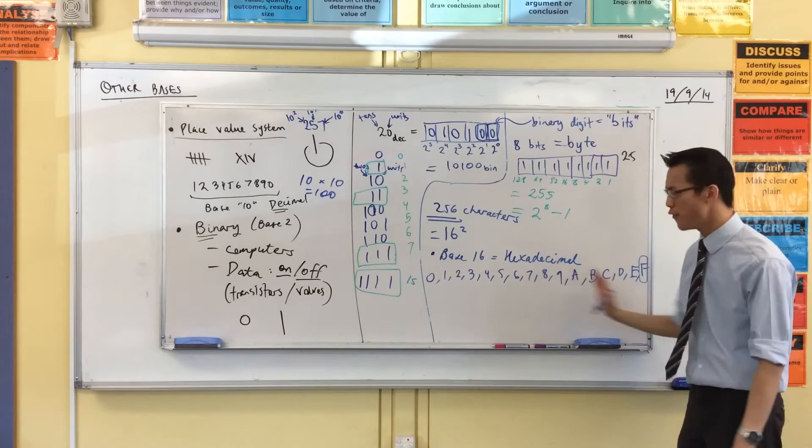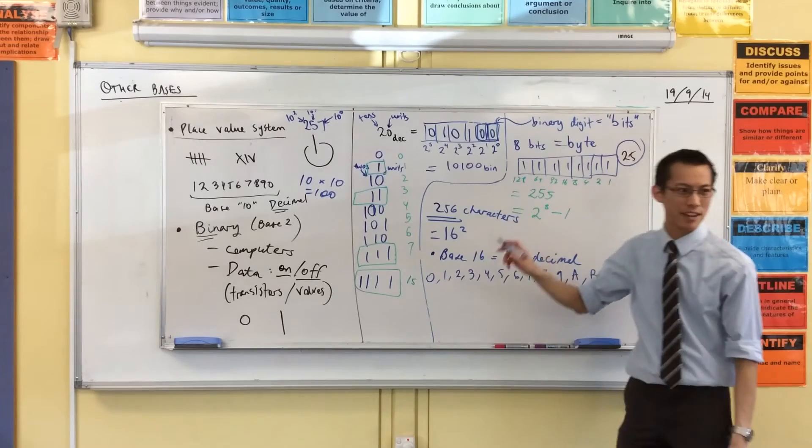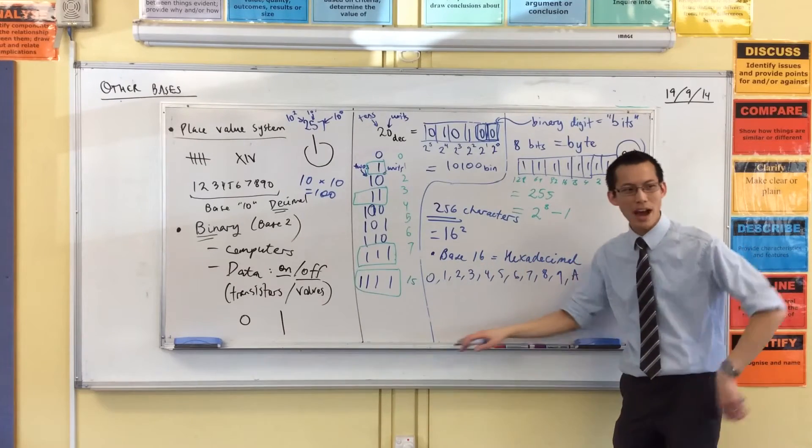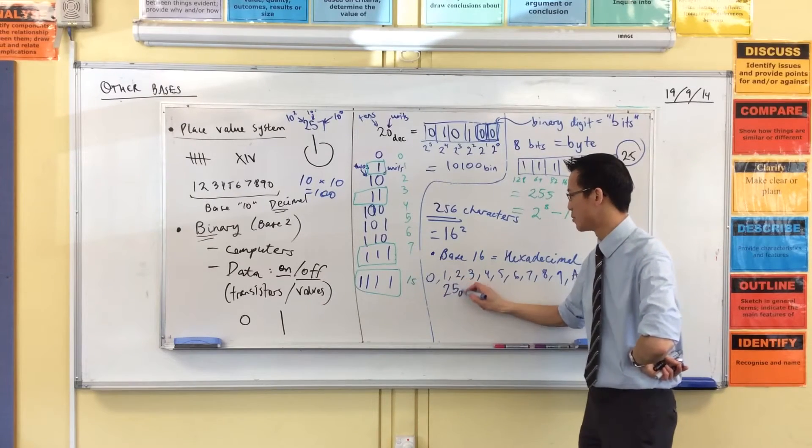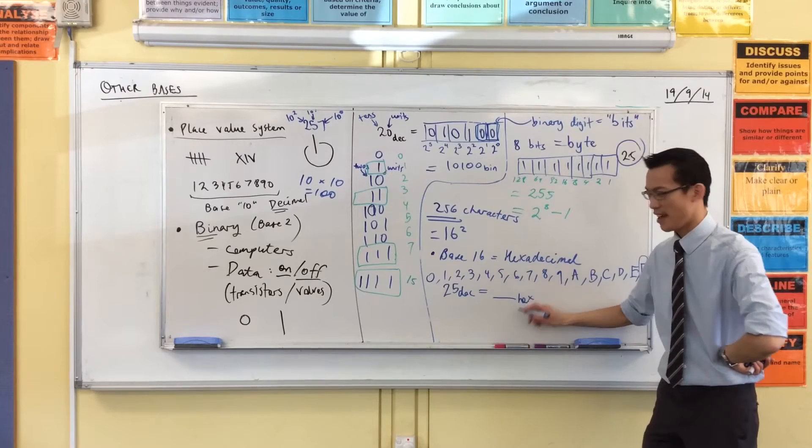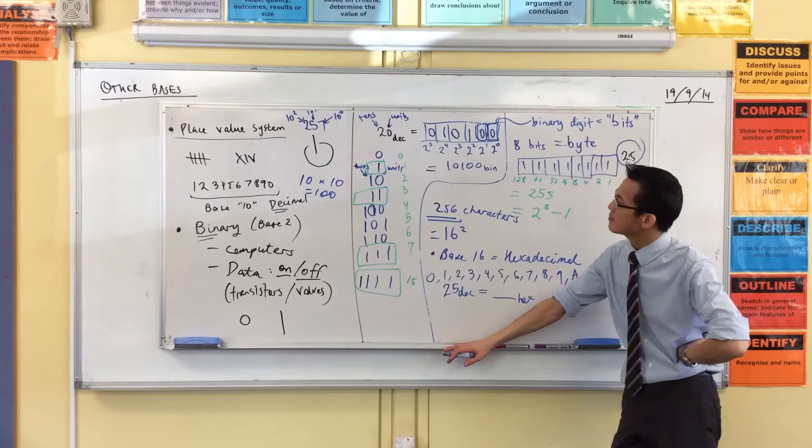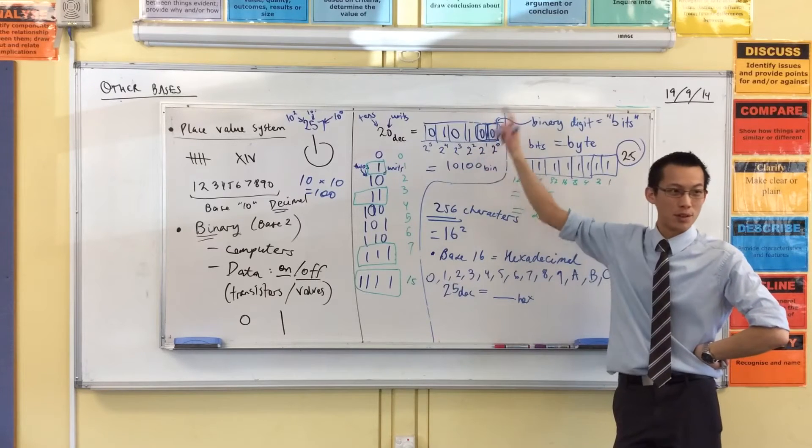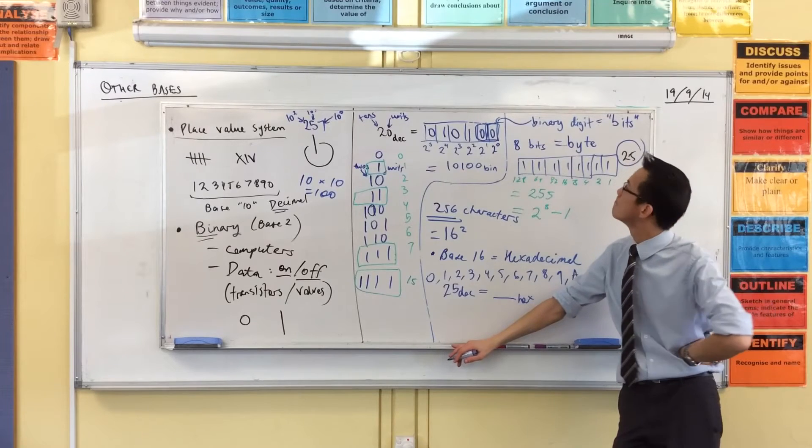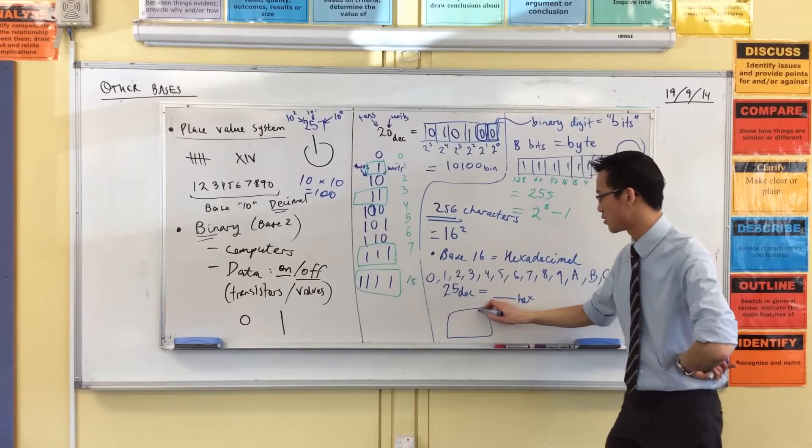So therefore, how do you read stuff like this? I'm going to pull out 25 again, right, for the first time. 25. How would I write 25 decimal in something hexadecimal? How am I going to do it? Think about how we translated before.